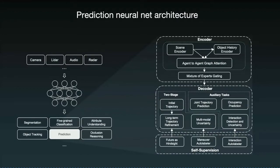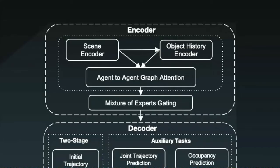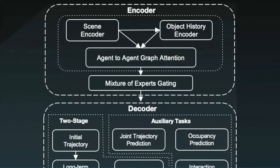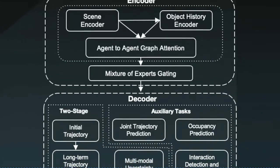The encoder takes each object's history and the context of the scene as input. It learns a latent representation of the full scene, including the interaction between multiple agents through a graph attention network. It then adds structured capability through a mixture of expert design to model the distinct patterns of a diverse set of behaviors.